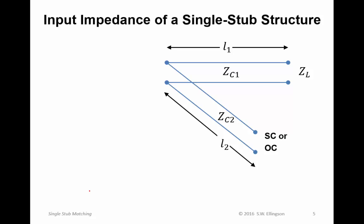Next, the input impedance of a single stub structure. Here we have a terminating impedance Z_L, a transmission line with a characteristic impedance Z_C1. I'm using now the subscript 1 because we have multiple transmission lines involved. So this is the characteristic impedance of this transmission line, which has a length L1. Sometimes I'll refer to this as the primary line.